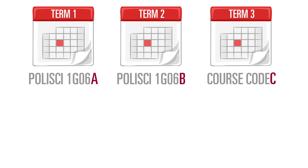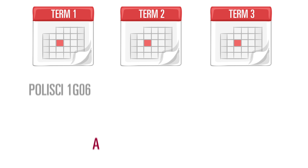When you add a multi-term course to My Planner or your shopping cart, you must register for the A component — for example, Political Science 1G06A. When any section, A, B, or C, of a multi-term course is removed, Mosaic automatically removes the other corresponding terms.